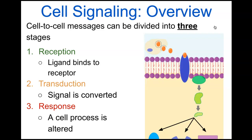In the response stage, a cell process is altered — the cell takes that chemical message and uses it to produce a change in cell activity. Let's now look at each stage in depth: reception, transduction, and response.